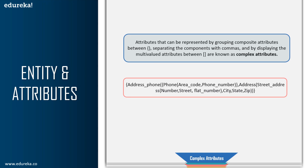Complex attributes are represented by grouping composite attributes in brackets, separating components with commas, and displaying multi-valued attributes with square brackets. For example, address can have phone number, area code, and phone numbers, plus street address, number, street, flat number, state, and zip code — all grouped together. That was entity relationship diagrams: entities, attributes, and relationships.